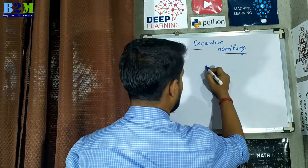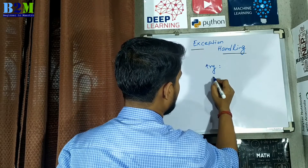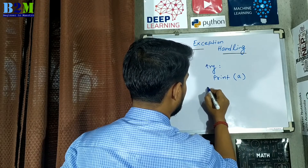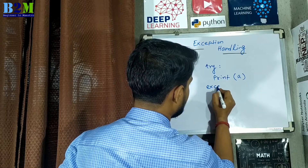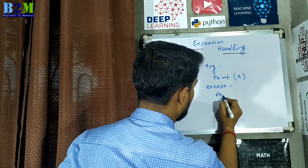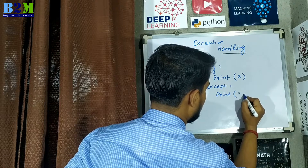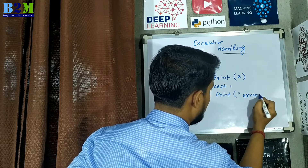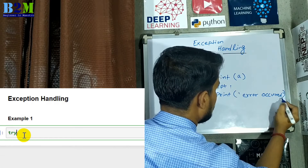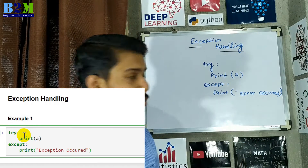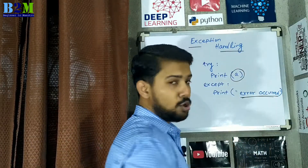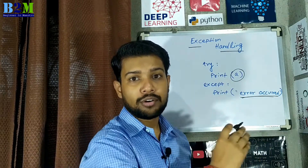For example, within the try block, if you want to print a variable called 'a', you then have to write an except block — that is the exception handling block. You can print a message like 'error occurred'. For this code, the output will be 'error occurred', because the variable 'a' is not defined in your code but you are trying to print it.